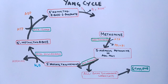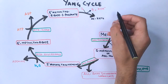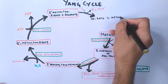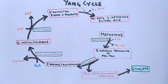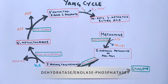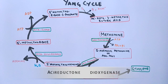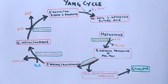In the presence of an oxygen molecule, the conversion of 5-methylthioribose phosphate takes place. It gets converted into alpha-keto-gamma-methylthiobutyric acid through intermediate formations. These intermediates are catalyzed by dehydratase, enolase, phosphatase, and ARD dioxygenase enzymes. Through these intermediate formations, we finally obtain alpha-keto-gamma-methylthiobutyric acid.